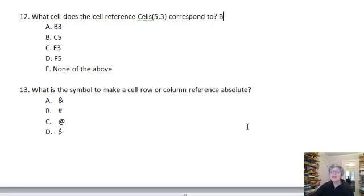What is this symbol to make a cell row or column reference absolute? Well, that is dollar sign D. Remember in our formulas if we put dollar A, dollar 1 makes it absolute.